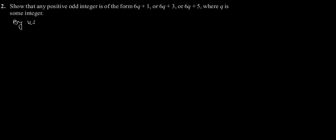Exercise 1.1, question number 2: show that any positive odd integer is of the form 6q plus 1, or 6q plus 3, or 6q plus 5, where q is some integer. We will solve this by using Euclid's division lemma.